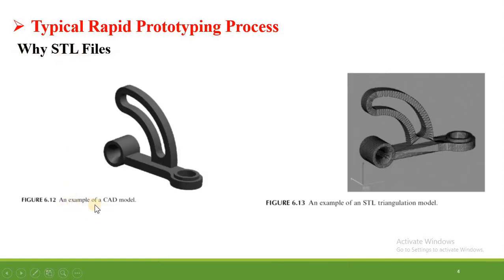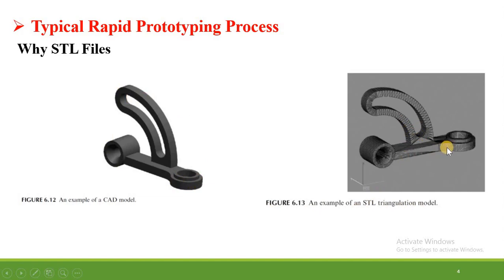You can observe here a typical example of a CAD model, but this CAD model cannot be directly printed using a 3D printing machine, so we need to convert it into STL file. It is shown here by triangular information — the STL file converts our CAD geometry into small tiny triangles.